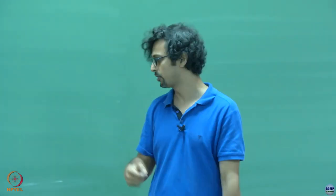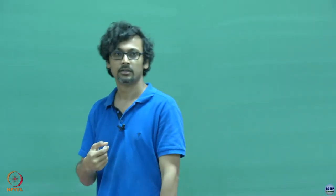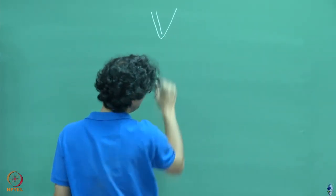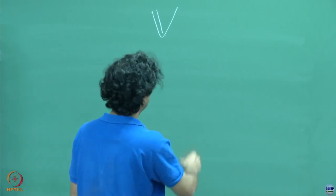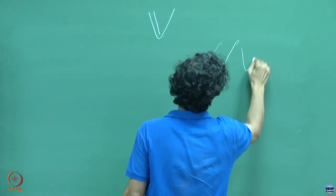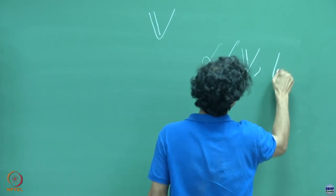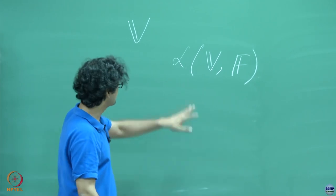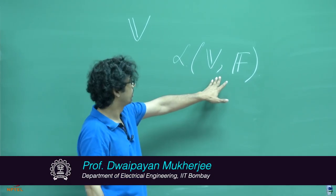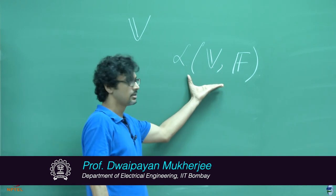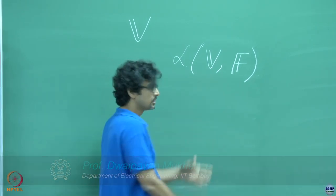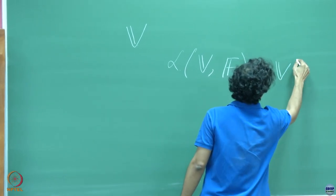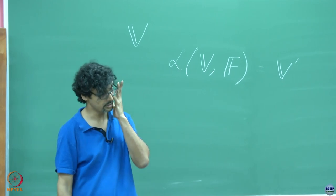In the previous class, we tried to look at this new concept called dual spaces. We saw that given a vector space V, if we take a collection of all linear maps from this vector space to the field on which this vector space is defined, then this gets a special name. We call it the vector space of all linear functionals and we denote it by V prime, and we call it the dual space.